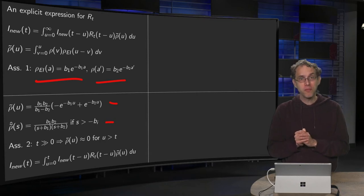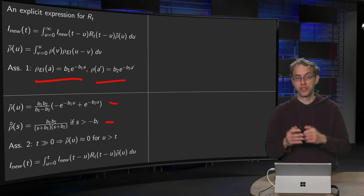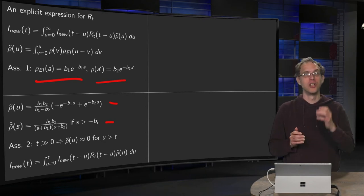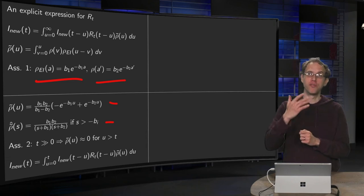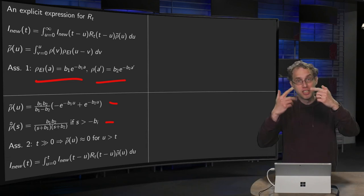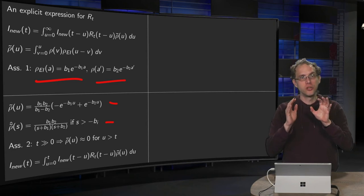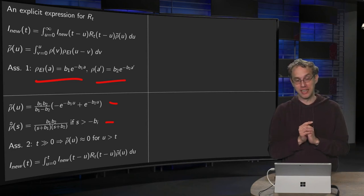This is debatable. Fortunately, this can be easily generalized to better distributions like gamma distributions. So let's start with the exponential ones, see what we get. And then, if needed, we can generalize this. So this is not such a bad assumption in that sense.